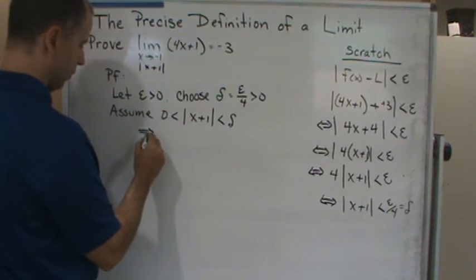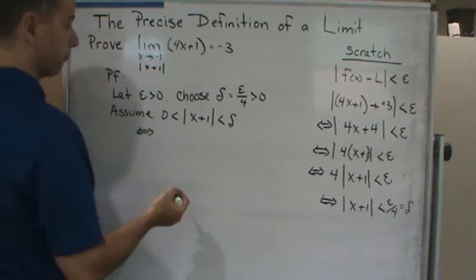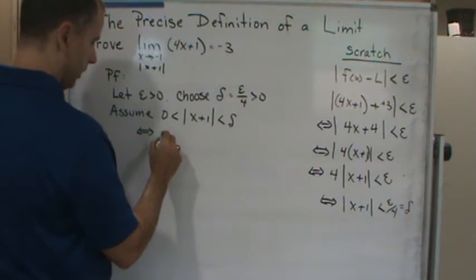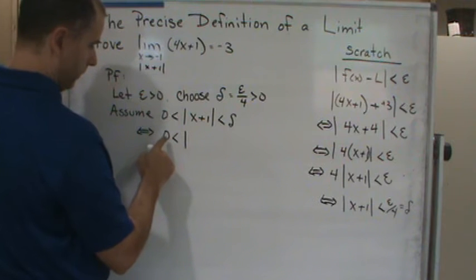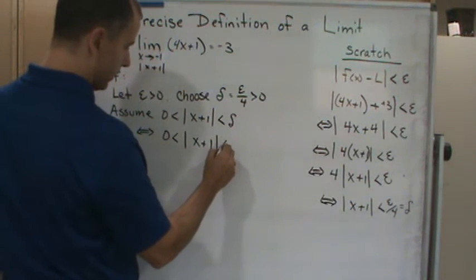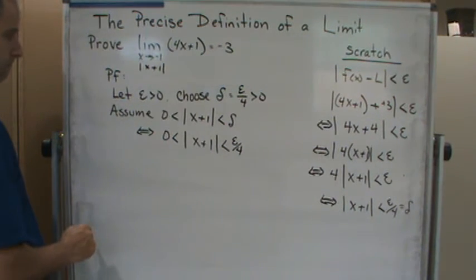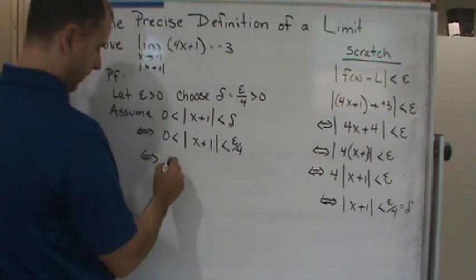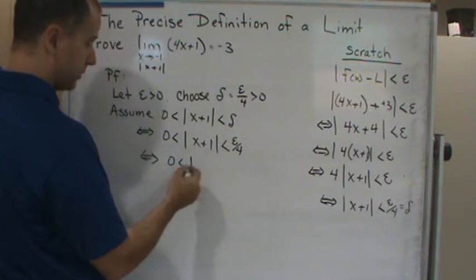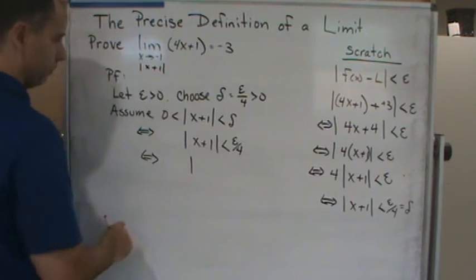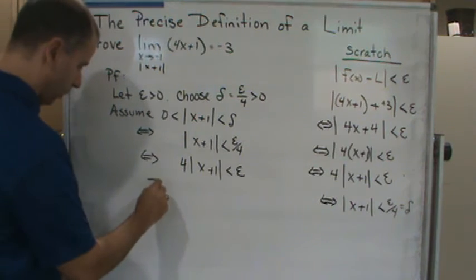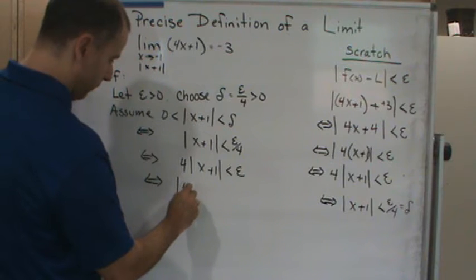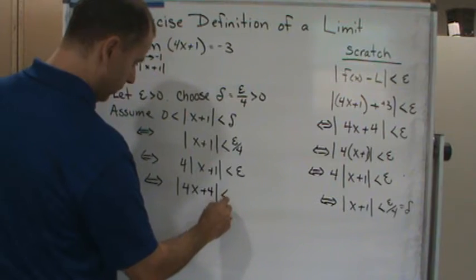Which is equivalent to what? Now I'm going to manipulate this. This is less than epsilon over 4, which is equivalent to what? Now I'm going to multiply both sides by 4. So this is going to be 4 times x plus 1, which is less than epsilon, which is then equivalent to what? Now I can bring it in because it's just constant. So 4x plus 4, which is less than epsilon.